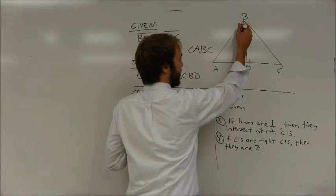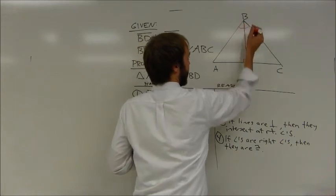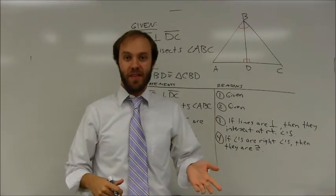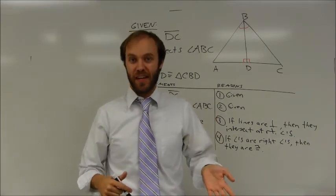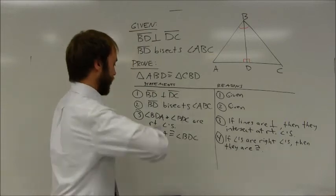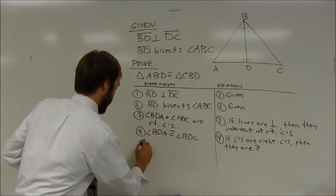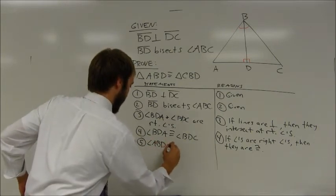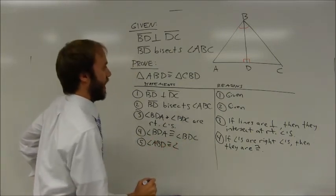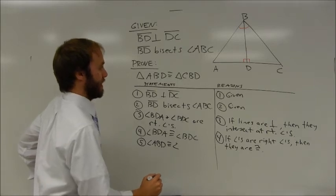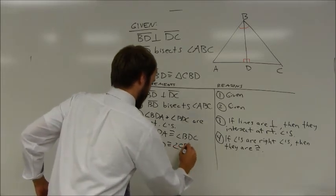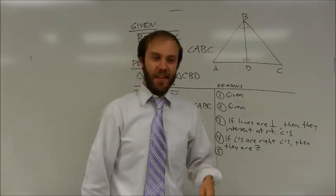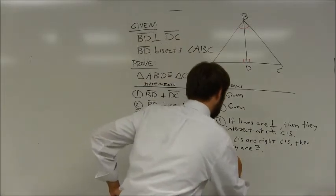If an angle is bisected, it is divided into two congruent angles. Again, I need as many congruent parts of my two triangles as I can get, at least until I can arrive at one of my congruence rules. So, I can state that angle ABD is congruent to angle CBD. And the reason being, if an angle is bisected, then it is divided into two congruent angles.